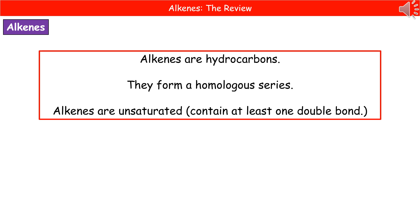Welcome to our review on alkenes. The alkenes are forms of hydrocarbons, so they're made of hydrogen and carbon only, and they form a homologous series because they've got features in common. The alkenes are unsaturated, which means they contain at least one double bond, and they have the same general formula.